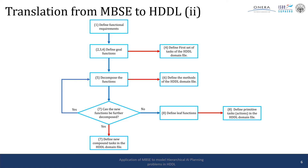The first step of the translation is to define the functional requirements the system is expected to fulfill. From these requirements we define high-level functions, which are translated into tasks in the HDDL domain file. These high-level functions are assembled in a functional flow block diagram and define the initial hierarchical task network in the HDDL problem file. The high-level functions are then decomposed by answering: how can we accomplish this function? From different inputs we get different decompositions, yielding different methods. If sub-functions can still be decomposed, we go back to defining methods for them; if not, we have primitive functions written as actions in the HDDL domain file.